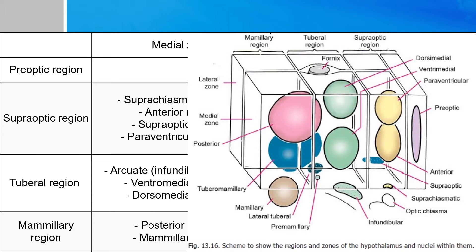In the tuberal region, right above the tuber cinereum and infundibulum, you have on the medial side the dorsomedial and ventromedial nucleus, as well as the arcuate nucleus. In the mammillary region on the medial side, you have the mammillary bodies as well as the posterior nucleus. Laterally, the lateral nuclear group exists and functions roughly the same.